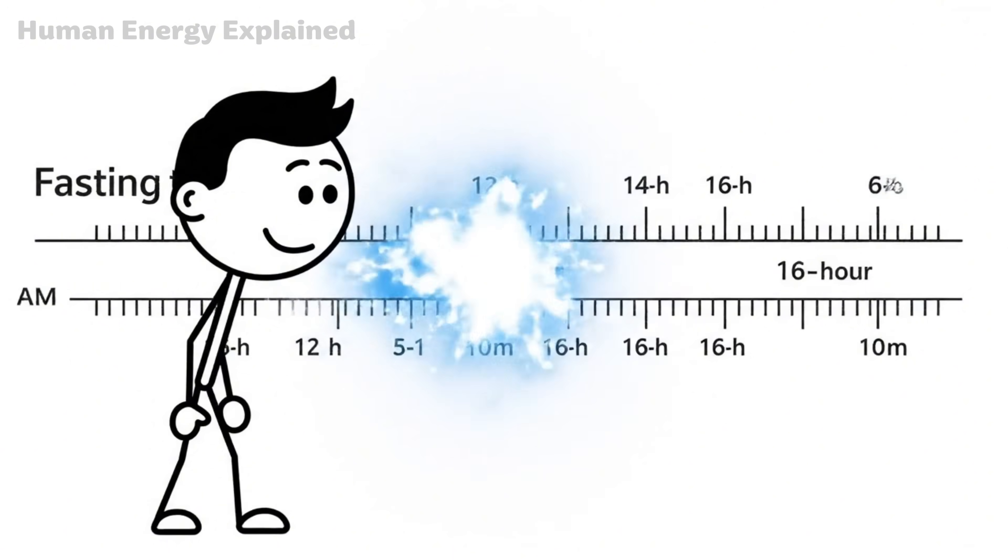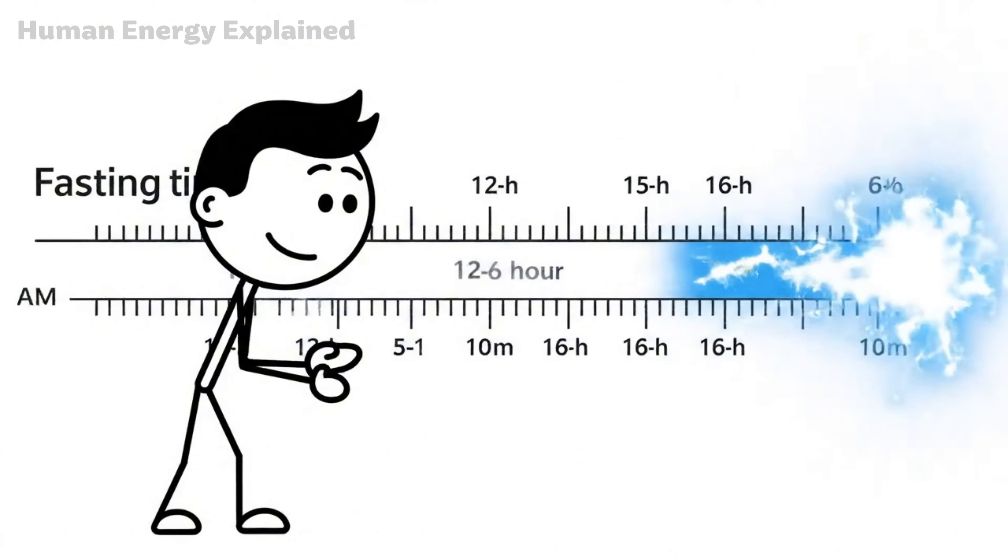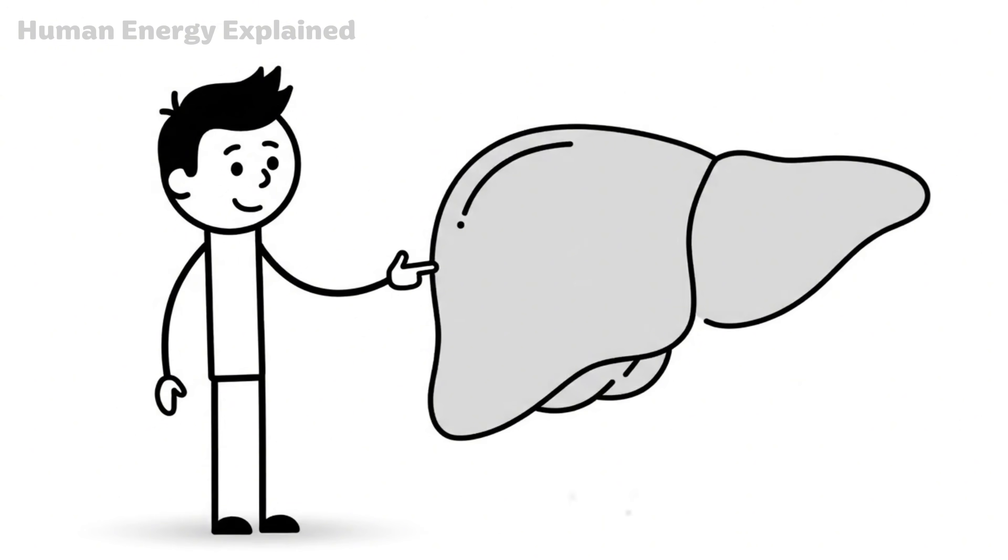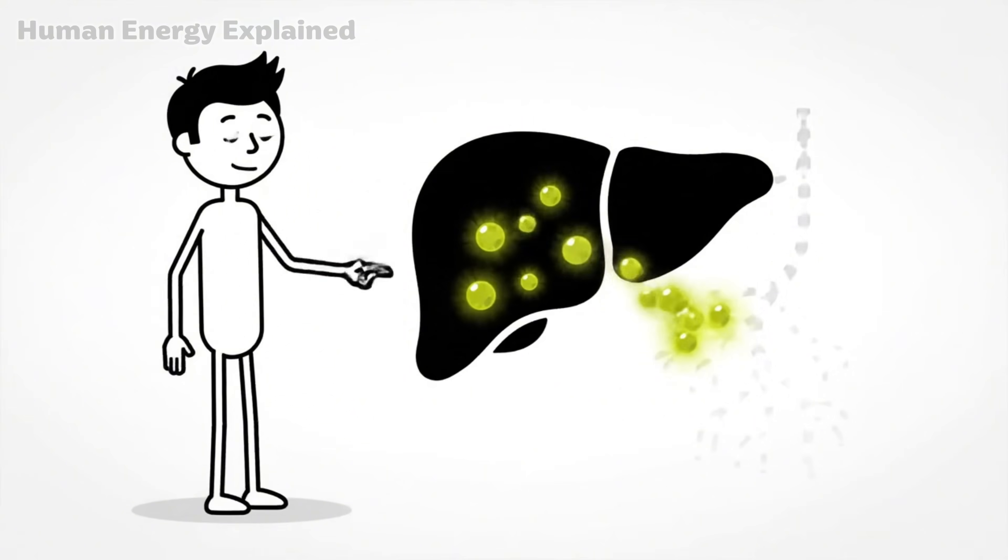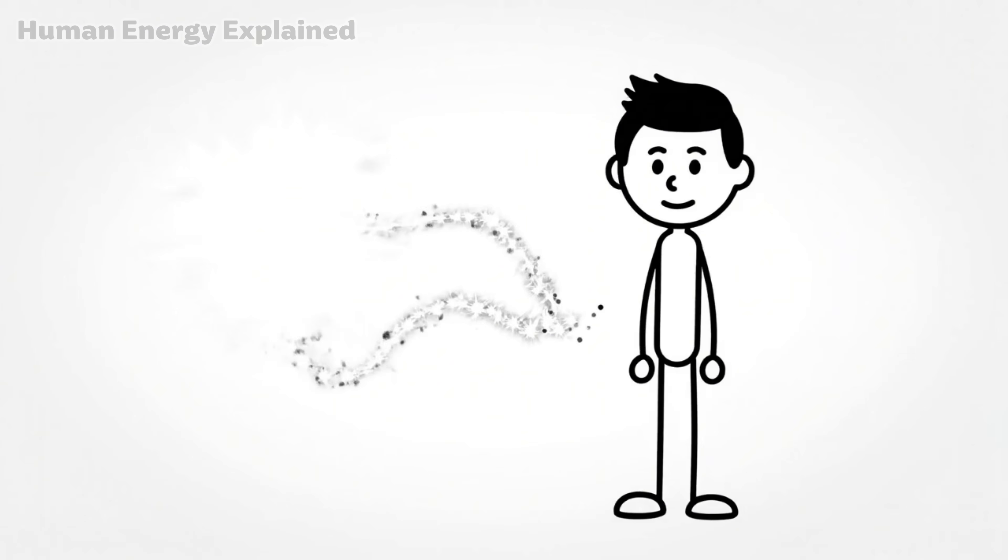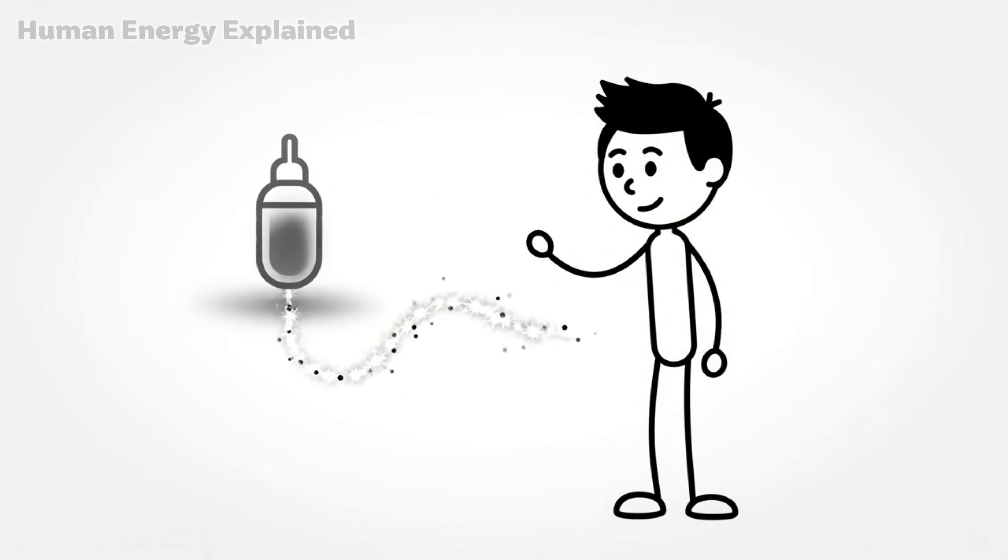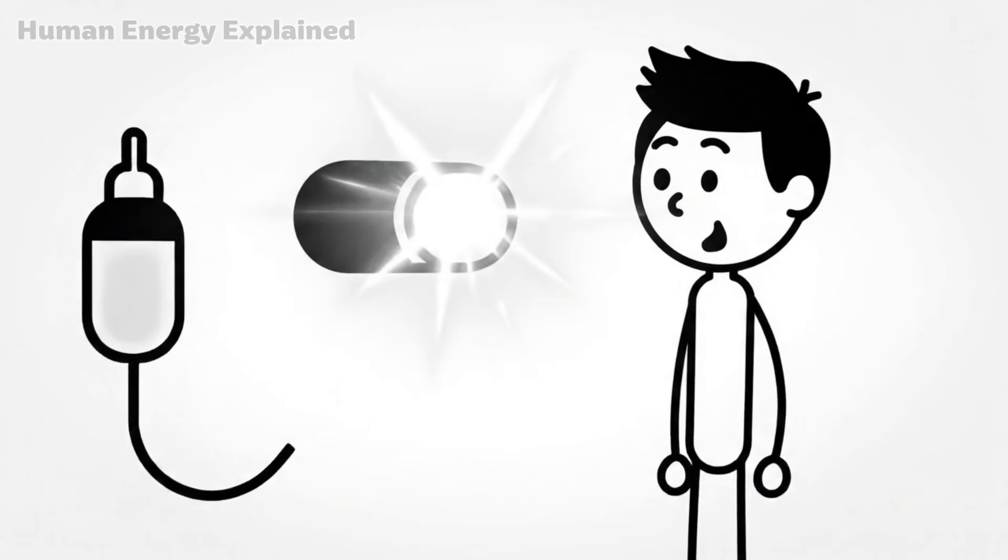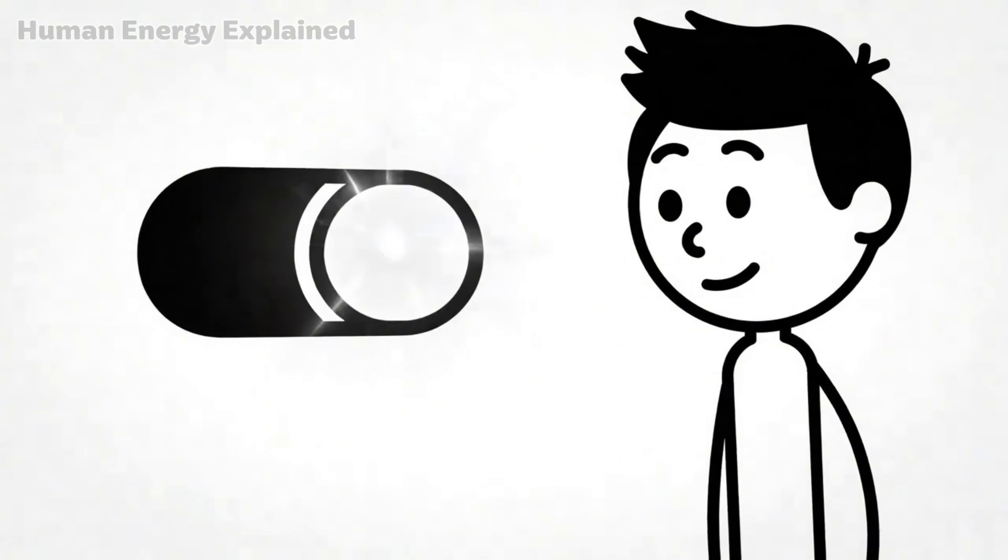Now let's talk about what happens between hour 12 and 16. This is where things get interesting. By this point, your glycogen stores are significantly depleted. Your liver has been releasing glucose to keep your blood sugar stable, but those reserves are running low. Insulin drops to baseline levels. And your body faces a decision. It needs fuel. Glucose is running out. So it does something remarkable. It flips a switch.